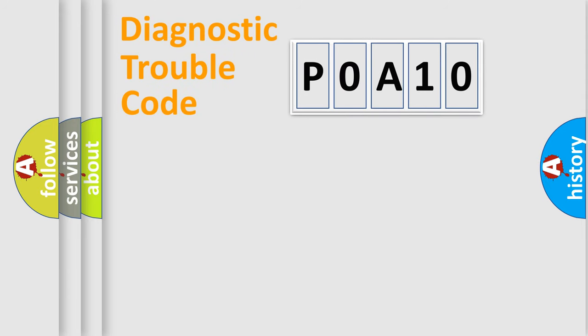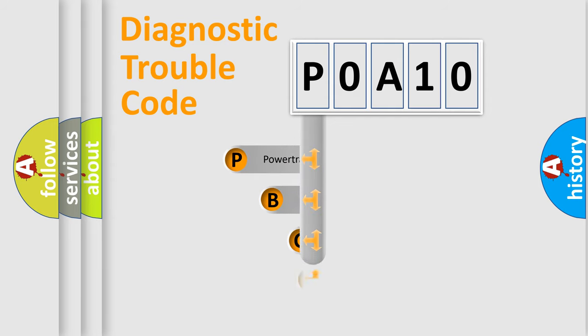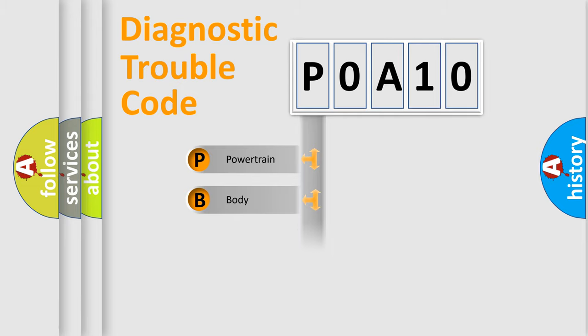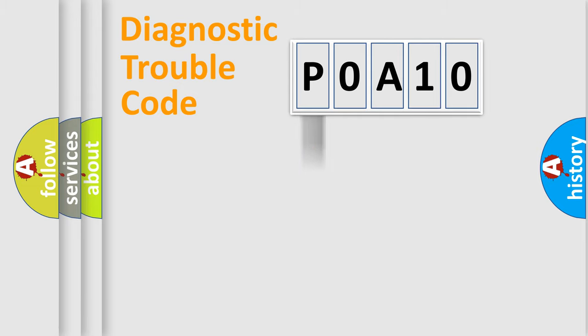Let's do this. First, let's look at the history of diagnostic fault code composition according to the OBD2 protocol, which is unified for all automakers since 2000. We divide the electric system of the automobile into four basic units: powertrain, body, chassis, and network.